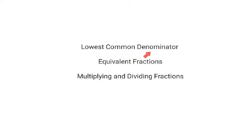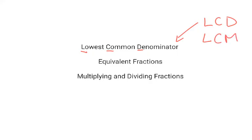In our last lesson we looked at lowest common denominators and how to find them using something called a lowest common multiple. A lowest common denominator was referred to as an LCD, and the lowest common multiple goes by LCM. You might be asking yourself why you're learning about an LCD and an LCM. Well, you need to know how to figure these out before you can write equivalent fractions, and you need to know how to write equivalent fractions before multiplying and dividing fractions, which we will be learning about in our next video. But today we will be focusing on equivalent fractions.